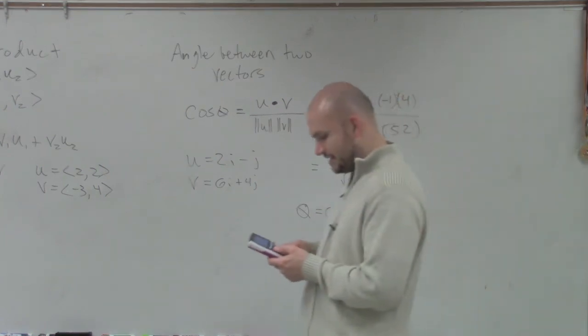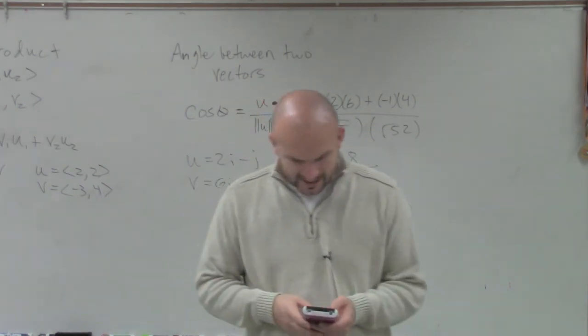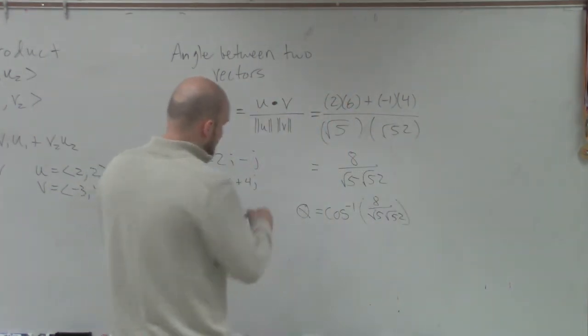8 divided by that answer. And then I take the inverse cosine of that answer. And I'd get 60.255.